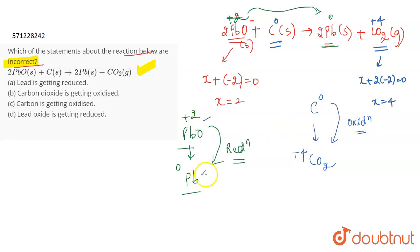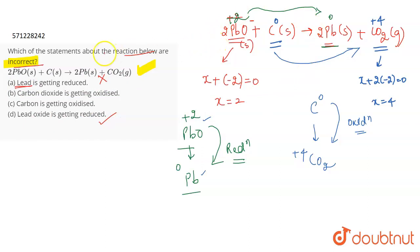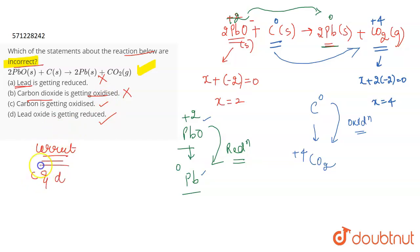When the oxidation number decreases from reactant to product, it is reduction. So carbon is getting oxidized to CO2. Now looking at the options: the statement 'lead is getting reduced' — no, it is lead oxide that is getting reduced. The statement 'carbon dioxide is getting oxidized' — no, it is carbon that is getting oxidized. So the correct statements are C and D, and the incorrect statements are A and B.